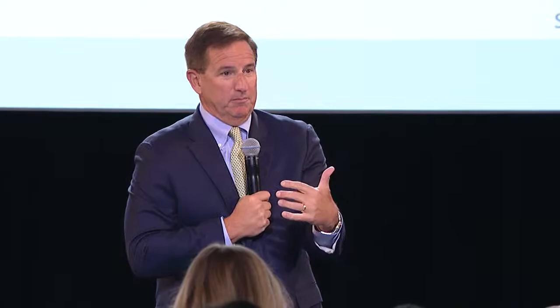This is not prognostication — this is what's happened. This is what we've been living through since the crash in 2008. A lot of stock market improvement, but almost all of that improvement has come from the expansion of multiples driven by earnings, not driven by revenue — driven by lower expense structures.